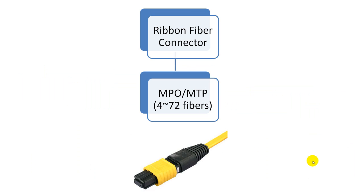Finally, there is one type of connector which holds from 4 to 72 fibers. It is called the MT connector, commercially available as MPO and MTP connectors. They have ferrules which can hold from 4 to 72 fibers. The main use is for pre-terminated cable assemblies, such as an MTP-to-SC connector fan-out assembly, which has one MTP connector on one side and multiple SC connectors on the other side.